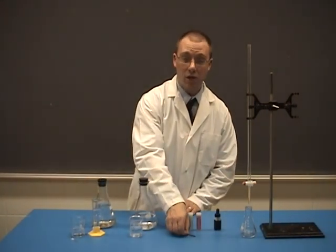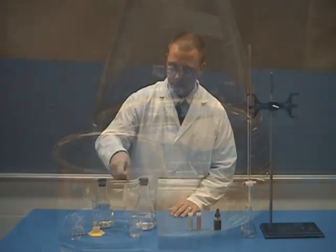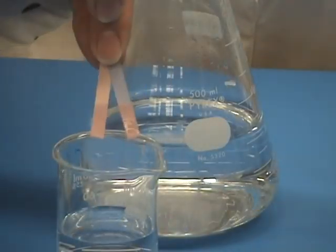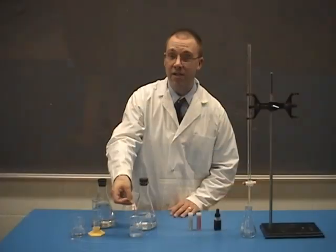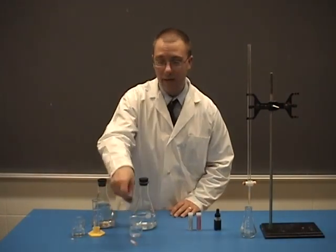Test the HCl with litmus paper. Since both litmus paper turned red, this is an acid.